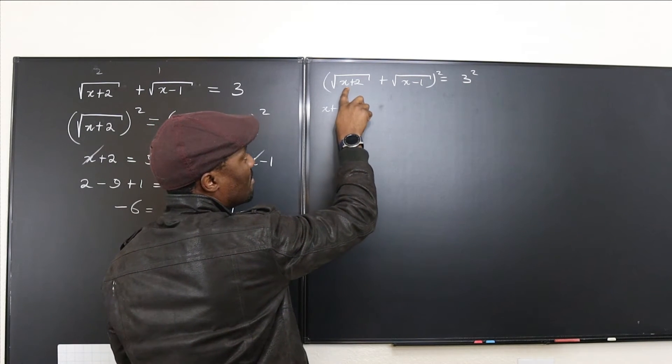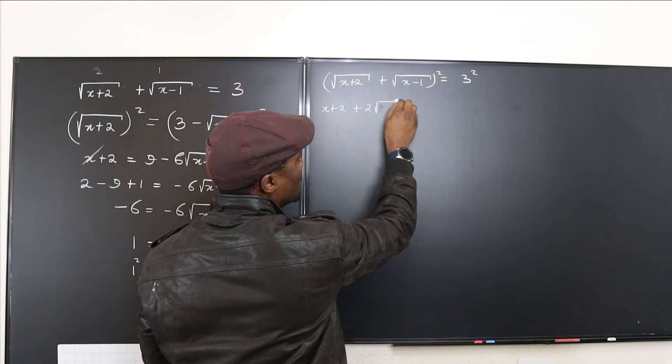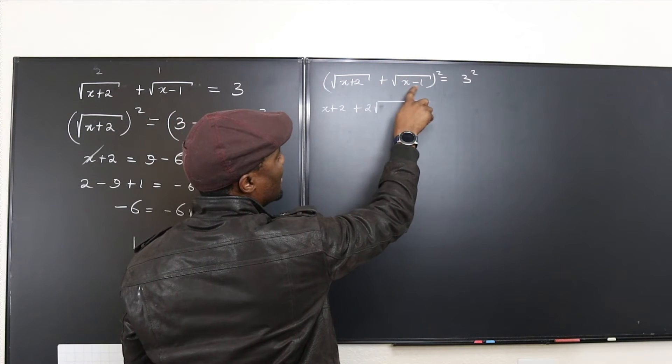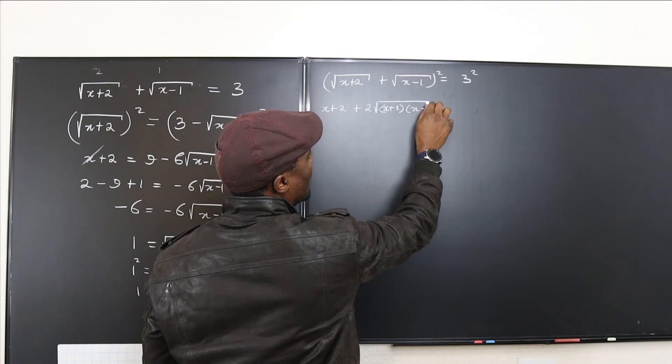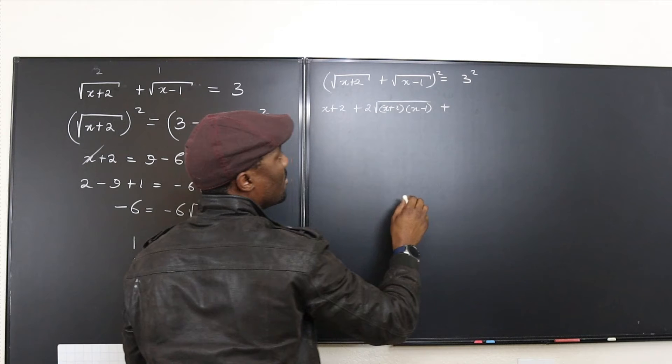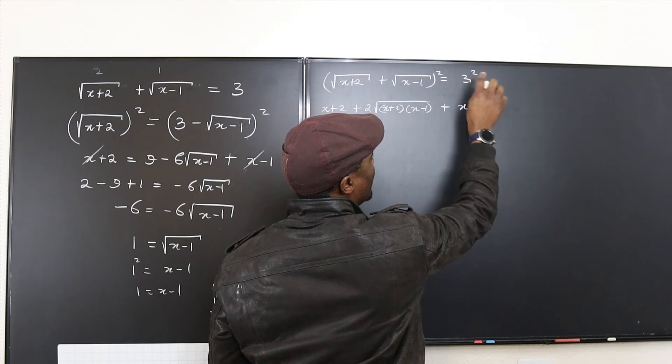Then we're going to multiply this by this. We're going to do it twice. So it's going to be plus 2 square root of x plus 2 multiplied by x minus 1 under the square root sign. Plus, if you square this expression, you get x minus 1, and this is going to be 9.